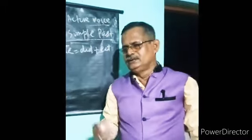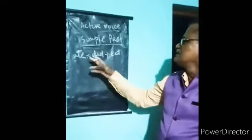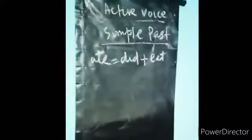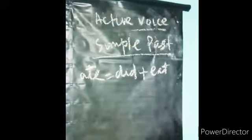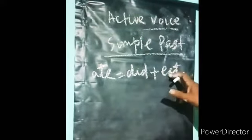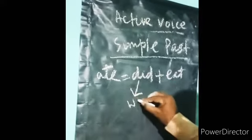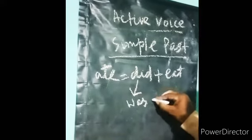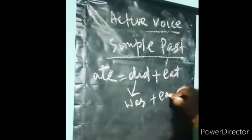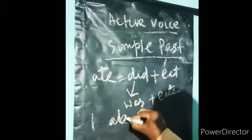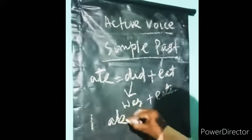Now let us turn to simple past. Simple past means, suppose one example I have given you here that is ate. Ate is equal to did plus eat. For did we use was plus it becomes third form that is eaten. Suppose I ate rice.